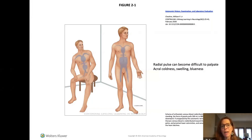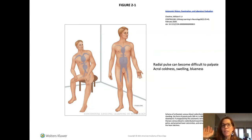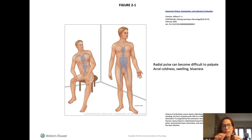When it comes to postural changes of autonomic function: when patients stand, there is a pooling of blood in the splanchnic mesenteric bed, making it sometimes difficult to find the radial pulse. They can get acral coldness, swelling, and blueness — patients will often say they have Raynaud's phenomenon because they get blueness of their fingertips or toes — and sometimes it's related to these autonomic changes.